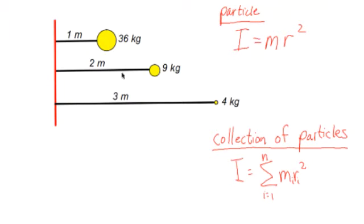Let's compare the moments of inertia for these three objects, rotating about our axis of rotation labeled with red, this red line. Our first particle is 36 kilograms at a distance from the axis of rotation of one meter. Our second particle is nine kilograms at a distance of two meters from the axis of rotation. And our third particle is four kilograms located three meters from the axis of rotation.